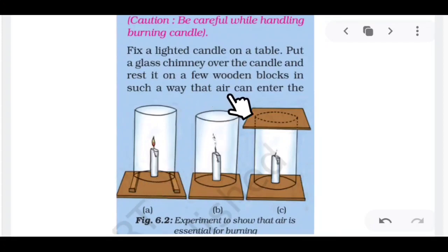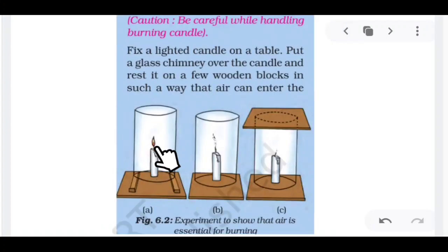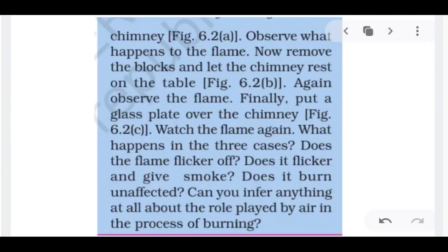What will happen? That way, the air can enter inside. Enter the chimney. That is figure number A, 6.2A. Observe what happens to the flame. Now remove the blocks. What happens here? Here the candle is burning. Why? Because the oxygen is getting inside. This oxygen is coming from here and the candle is burning well. Now come to the next part.